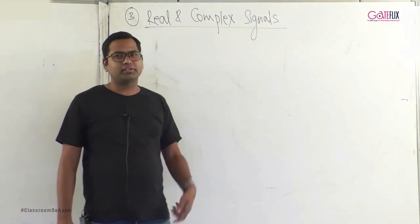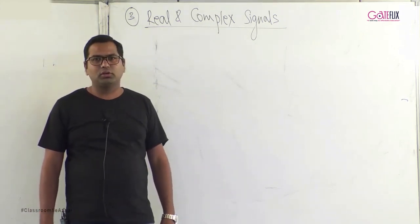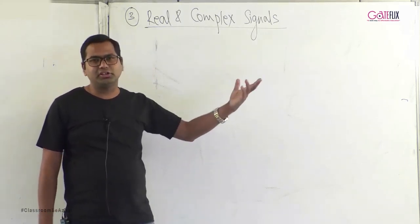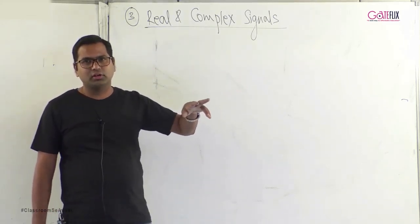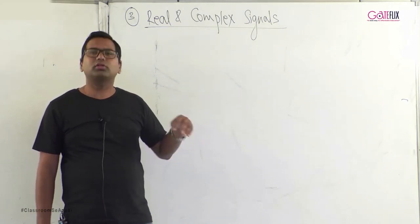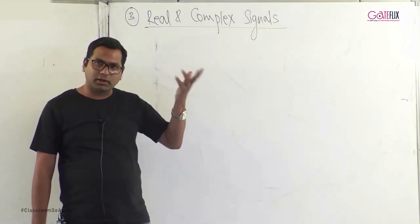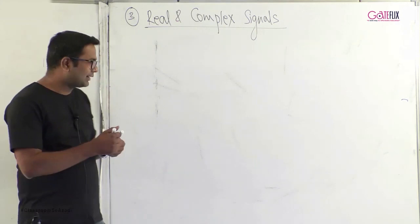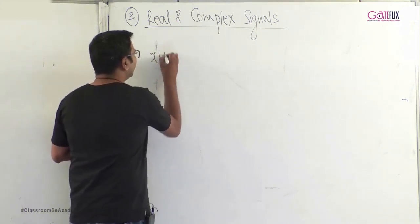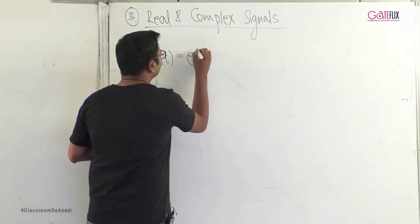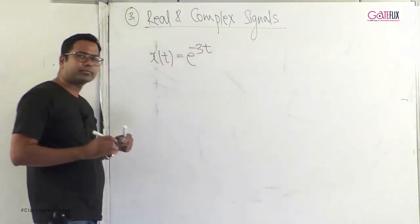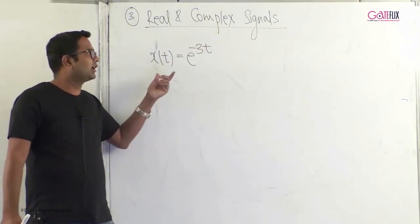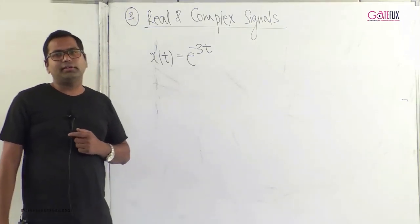A complex signal is a signal which always takes on complex values such as 2+3j, 4+5j, 1+√2j, or simply 5j, 10j. An example of a real signal is x(t) = e^(−3t), which always takes real values.